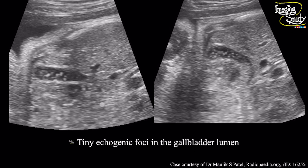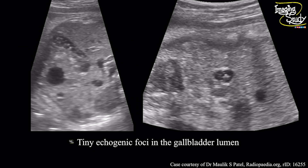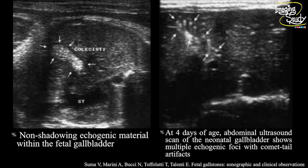Another case: you can see the gallbladder lumen here with multiple hyper-echogenic foci within the gallbladder lumen. Again, the gallbladder in longitudinal and transverse section with hyper-echogenic materials noted, indicating gallstone. In the next case, the gallbladder lumen is filled with hyper-echogenic material and no posterior acoustic shadow is noted. The right image is of the same baby but it is the postnatal scan done at four days of age, and we can see on trans-abdominal ultrasound multiple hyper-echogenic structures within the gallbladder lumen casting some comet-tail artifacts.